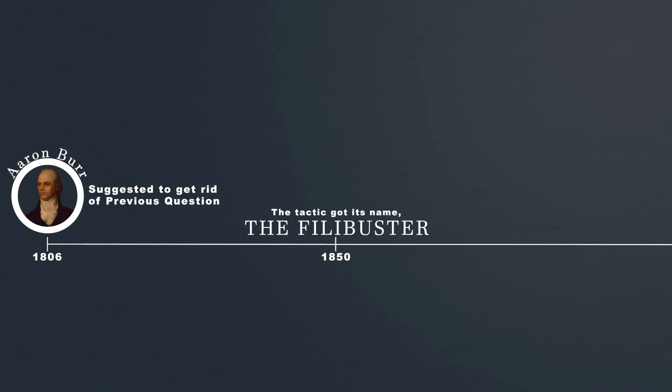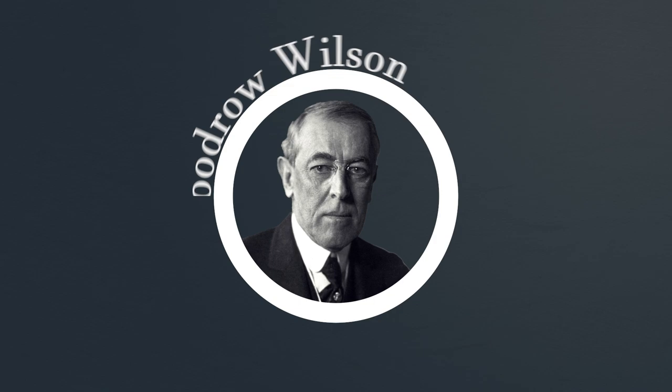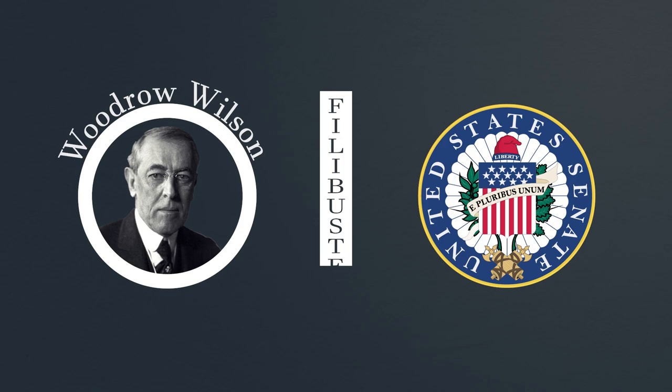From 1806 to 1917, there was no way of ending a filibuster if senators refused to stop debating. During World War One, former President Woodrow Wilson became frustrated that the Senate would not vote on legislation that would arm merchant ships with weapons to defend themselves during the war. A few anti-war senators succeeded in blocking the bill, tying up the Senate for 33 days and blocking other important legislation from passing.